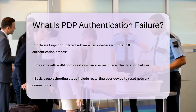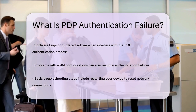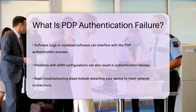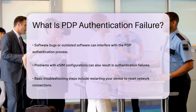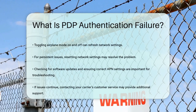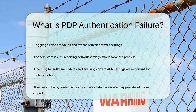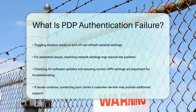To fix PDP authentication failures, you can try a few simple steps. Restarting your device is often a good starting point, as it can reset the network connections and clear temporary issues. Toggling airplane mode on and off can also refresh your device's network connection. For more persistent issues, resetting your network settings can be effective. This involves going into your phone's settings, finding the network reset option, and restarting your device.